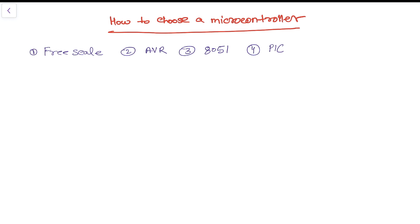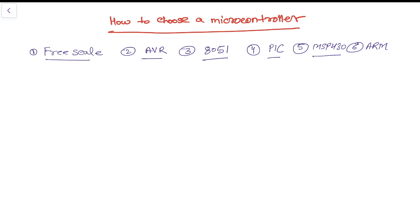The fifth type of microcontroller is the MSP430, made by Texas Instruments. The sixth type is ARM microcontrollers. So these are the basic microcontroller types available in the market.